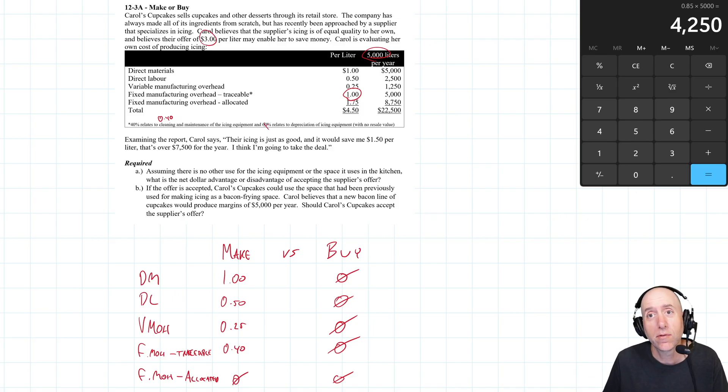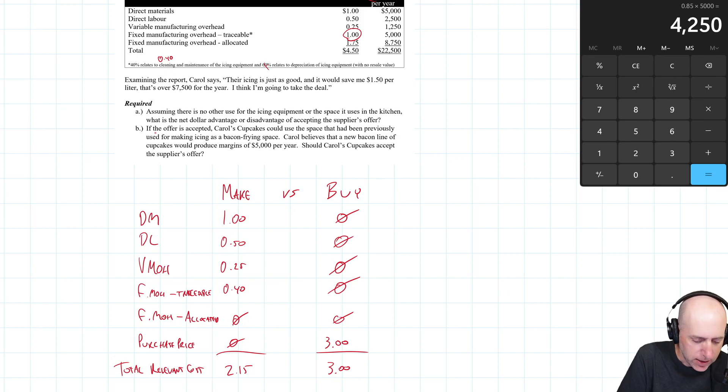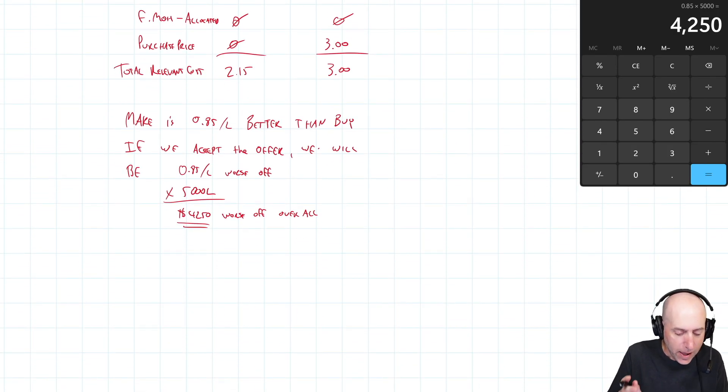Now importantly, if we can find some use for that space that the icing used to be made in, right, maybe we start making some other dessert or something, if that's the case and we start making money with that space, well, it changes the math here. And that's what's going to happen here. Part B says if the offer is accepted, Carol's cupcakes could use the space that had previously been used for making icing as a bacon frying space. Carol believes a new bacon line of cupcakes, that sounds good to me, would produce margins of $5,000 a year. Should Carol's cupcakes accept the supplier's offer or not? Well, now that changes the math.